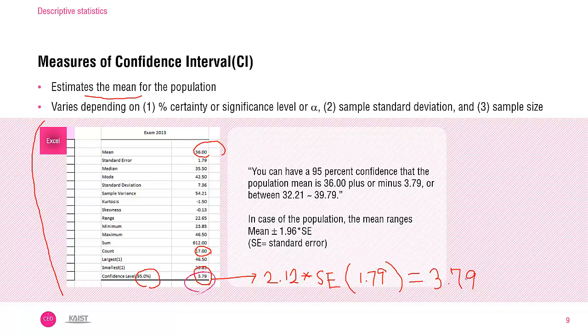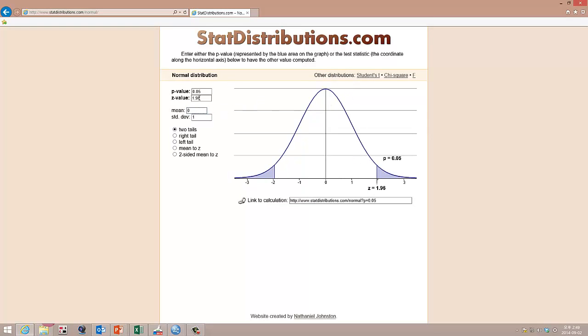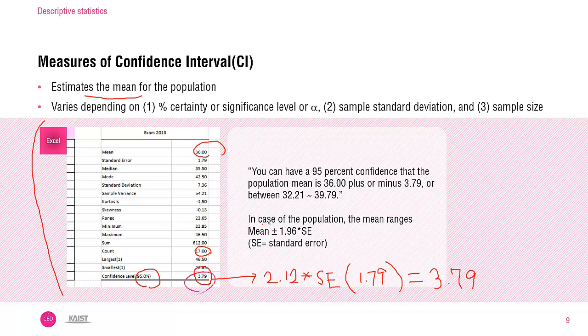When we estimate the mean of a normally distributed population, we consult normal distribution. The z value of a 2-tailed normal distribution for 95% probability corresponds to plus or minus 1.96. Let me show you normal distribution. In that case, you don't need a degree of freedom. Here you see 1.96 as the z value. So in case of the population, the mean range is mean plus minus 1.96 multiplied by standard error of the population. So it's a slight difference.